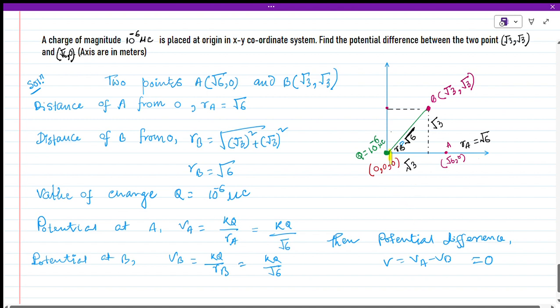Distance of B from O will be rB = √((√3)² + (√3)²) equals rB = √6. Then we see that rA equals rB.